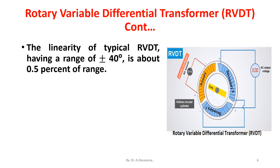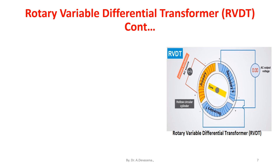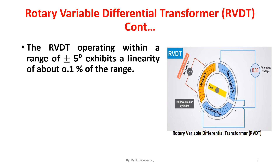Reducing the operating range improves the linearity. The RVDT operating within a range of plus or minus 5 degrees exhibits a linearity of about 0.1 percentage of this range. The advantages and disadvantages of the RVDT are similar to LVDT.